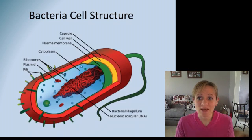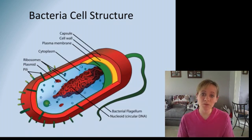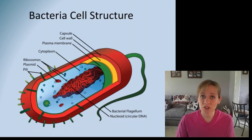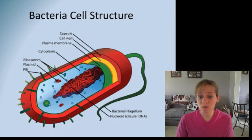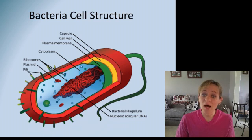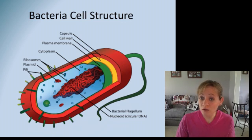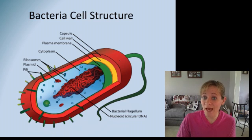Let's look at the cell structure — this should look familiar. The nucleoid region is where all the DNA is. Bacterial cells have cytoplasm, just like we do. They have ribosomes, just like we do. They have a cell membrane, just like we do. They have a cell wall, which is in yellow, and some have a capsule.